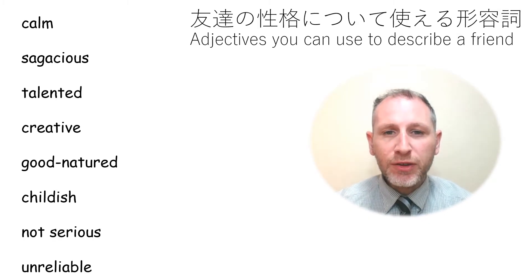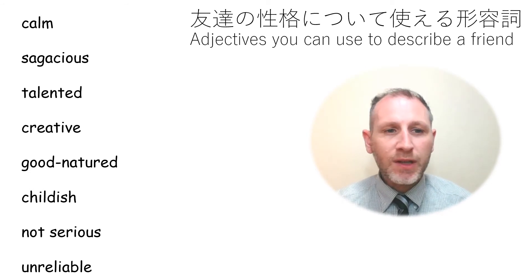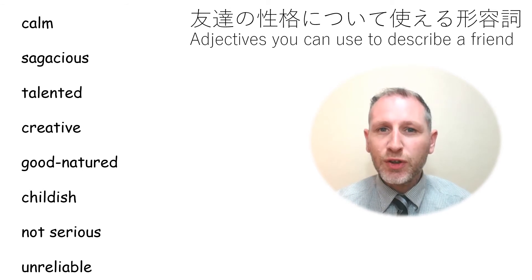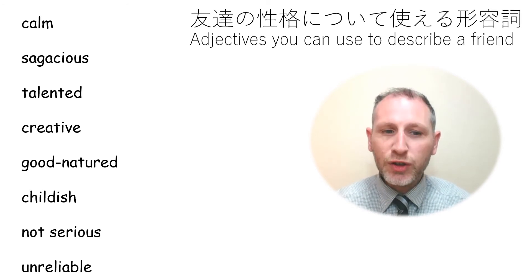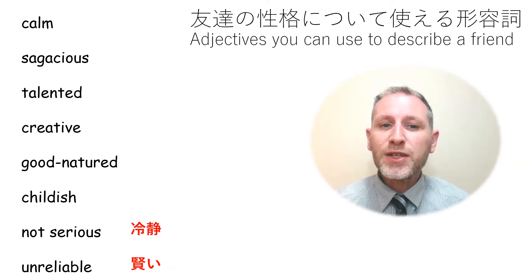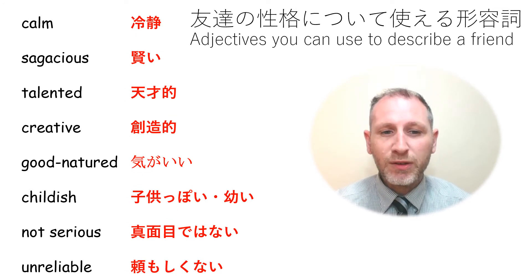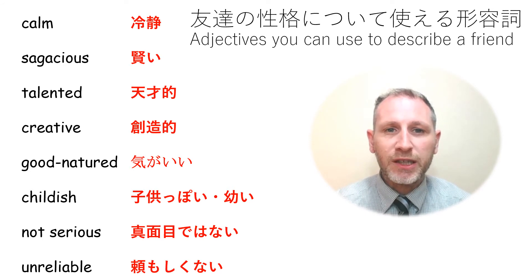When you describe a friend, you can use these words: calm, sagacious, talented, creative, good-natured, childish, not serious, unreliable. The last few are kind of bad words. This is what they mean — take a look, pause if you need to, or rewind to use these at a later stage.